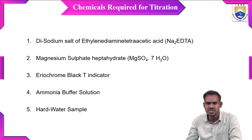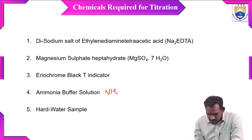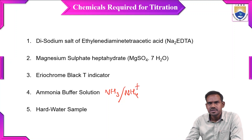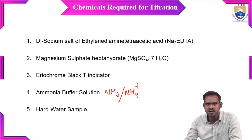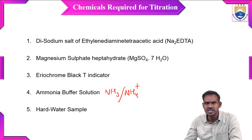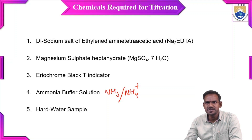As you know, buffer solution contains two components: a weak acid and its conjugate. Since we use ammonia buffer solution, it is a basic buffer. The two components are weak base NH3 and the corresponding conjugate acid NH4+. The fifth chemical required is the hard water sample itself — directly we can use tap water. These five are the chemicals required for this titration.